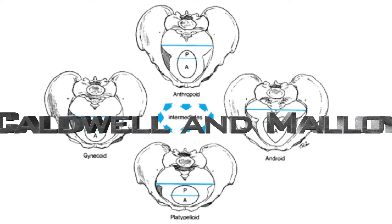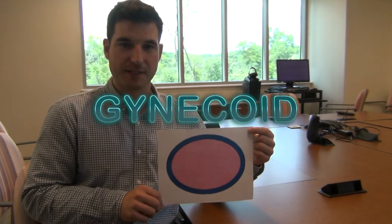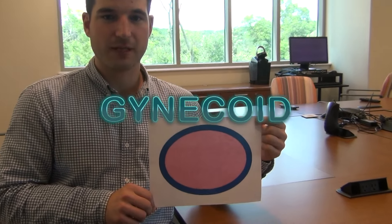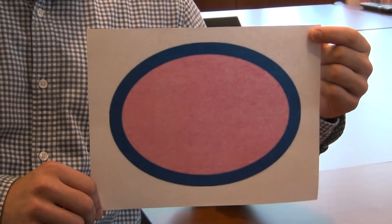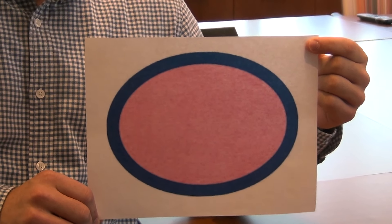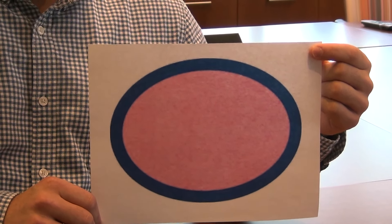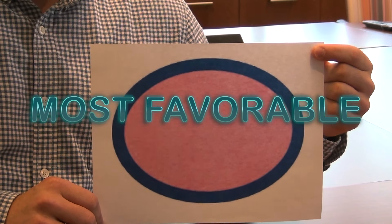In 1933, Caldwell and Malloy developed a classification system for the four basic female pelvic types: the gynecoid, android, anthropoid, and platypoid pelvic types. The gynecoid pelvis is the most common pelvic type, representing approximately 50% of all pelvic types. It is round and spacious throughout, creates an overall cylindrical shape that favorably allows for the occiput anterior rotation of the fetal head, and is the most favorable pelvic type for vaginal birth.